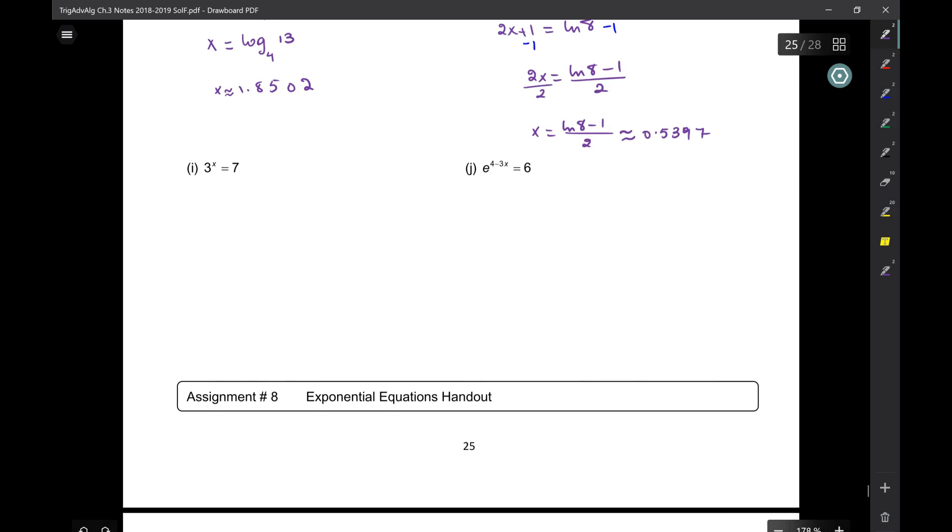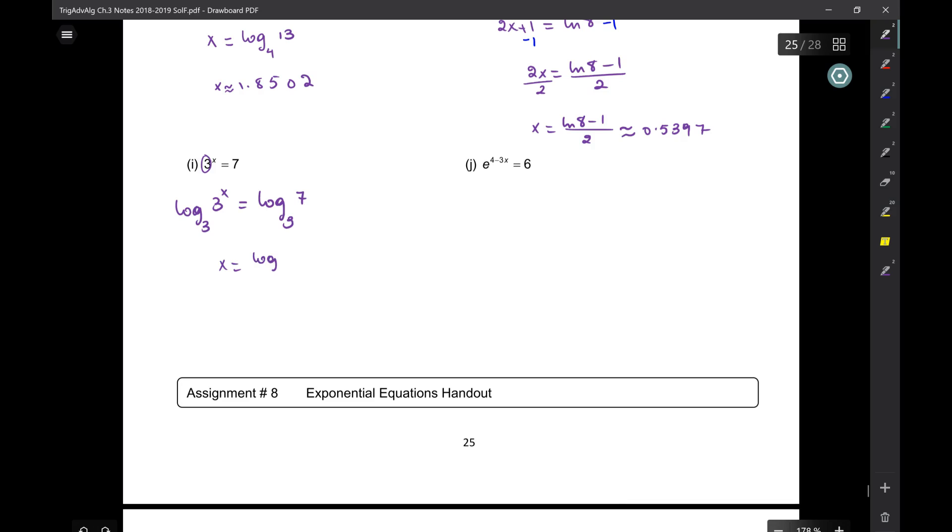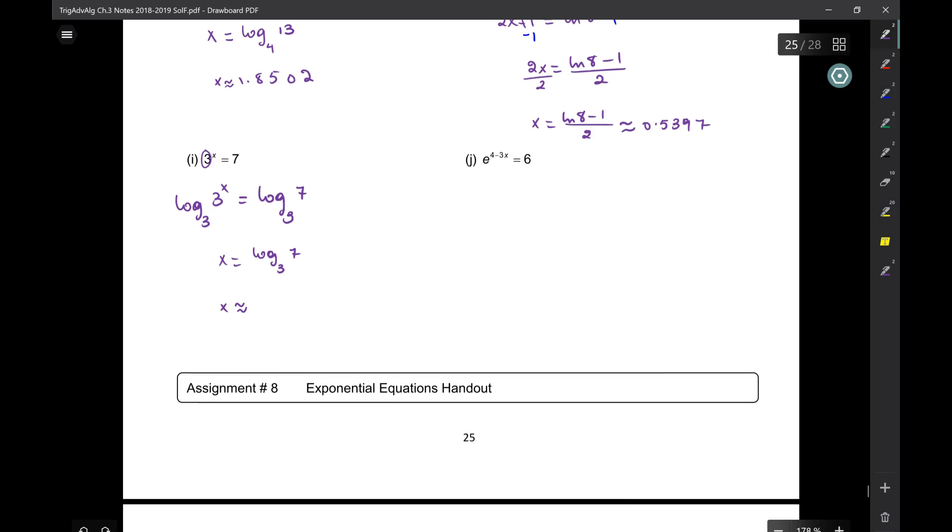Here, base is three. So log base three, three to the X equals log base three, seven. How come it's log base three? Because the base is three. So X is log base three of seven. And how much is that? 1.7712. Thank you. That's the argument of the log. It's called the argument. It's basically the value of three to the seven, or three to the X.